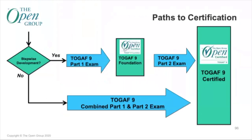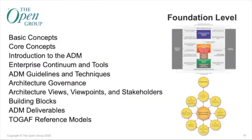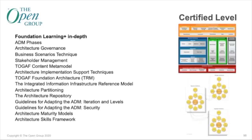There are two paths to certification. You could do stepwise development, or you can go direct to TOGAF 9 Certified via the combined Part 1 and Part 2 exam. The TOGAF 9 Foundation level includes 13 learning units — a foundational understanding of basic concepts. For the Certified level, we add an additional 27 learning units, making a total of 40 units.